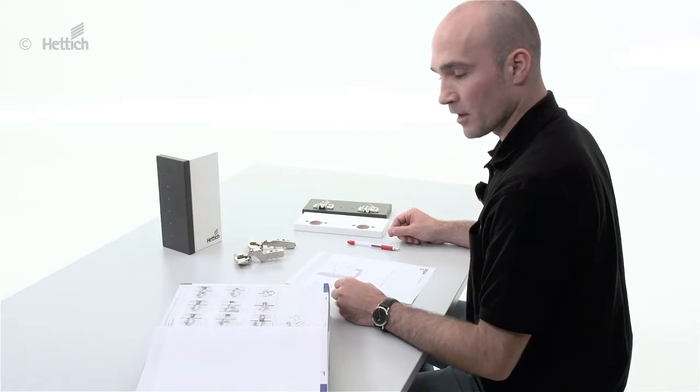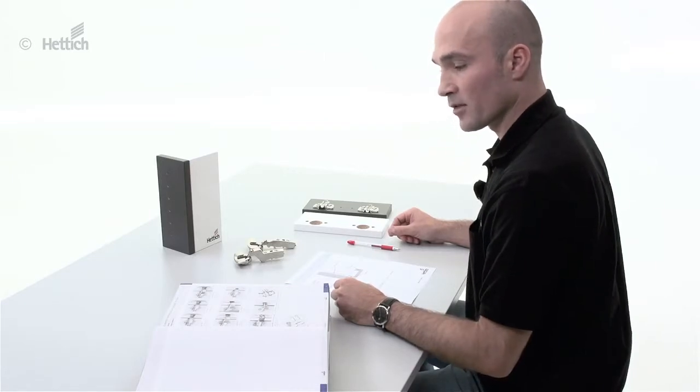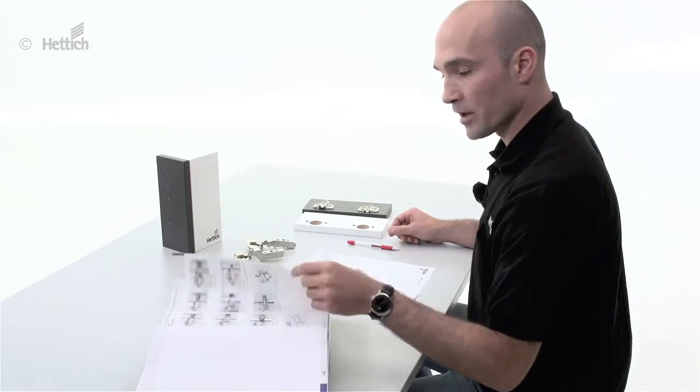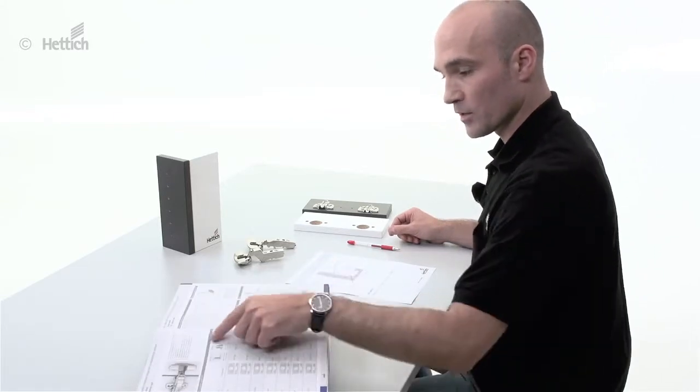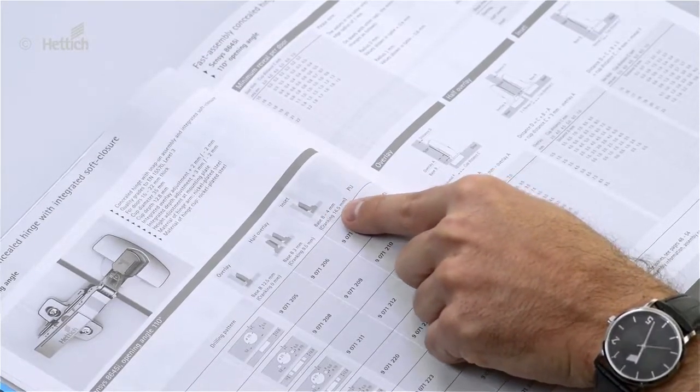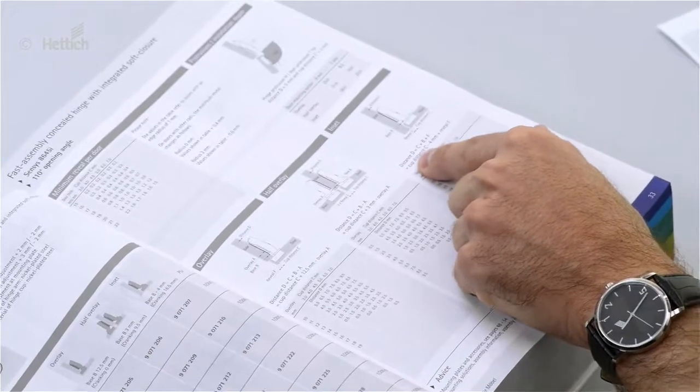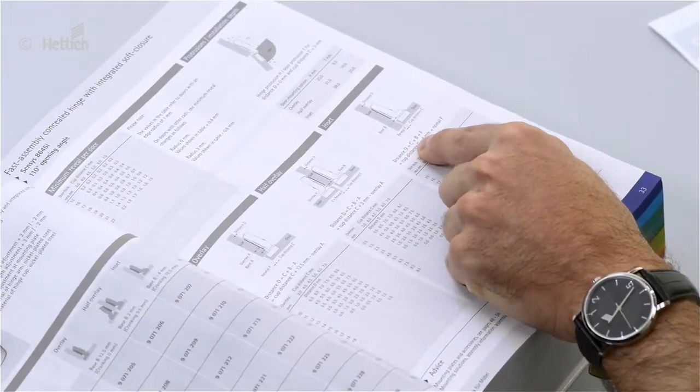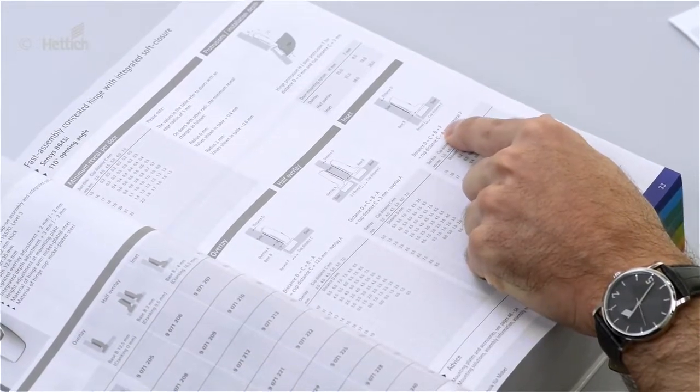In this step we want to demonstrate how to calculate a standard inset application. Therefore we go to the catalog page and we see here the inset application, and on the opposite side the formula to calculate the mounting plate distance D, which is C plus B plus F.